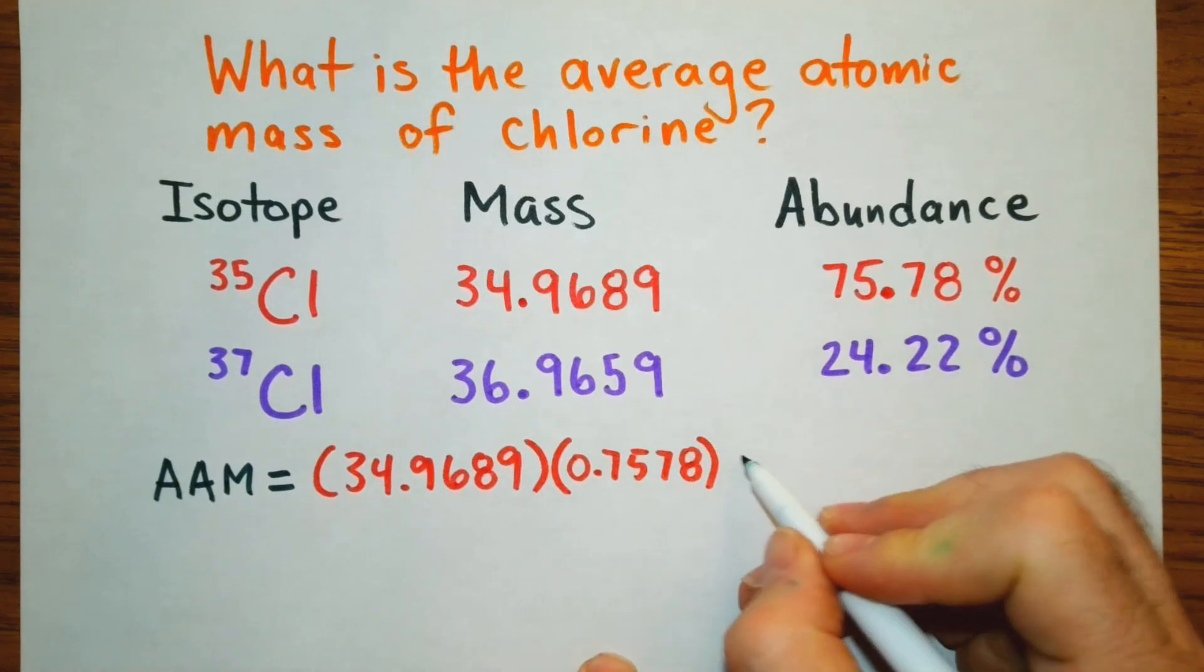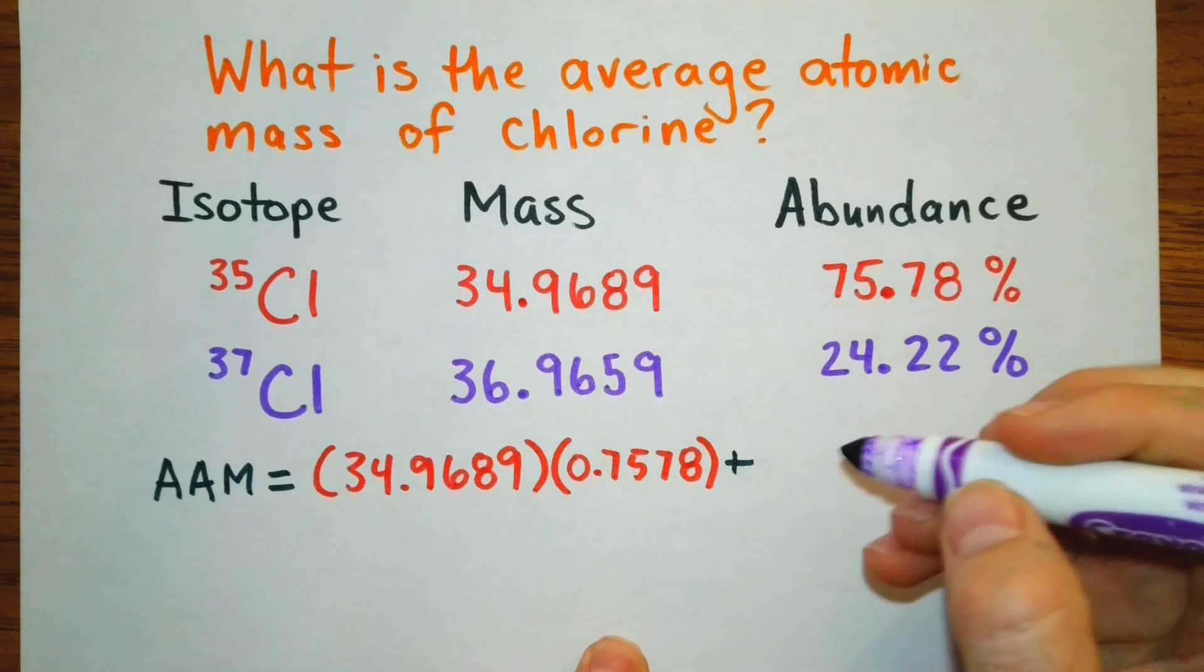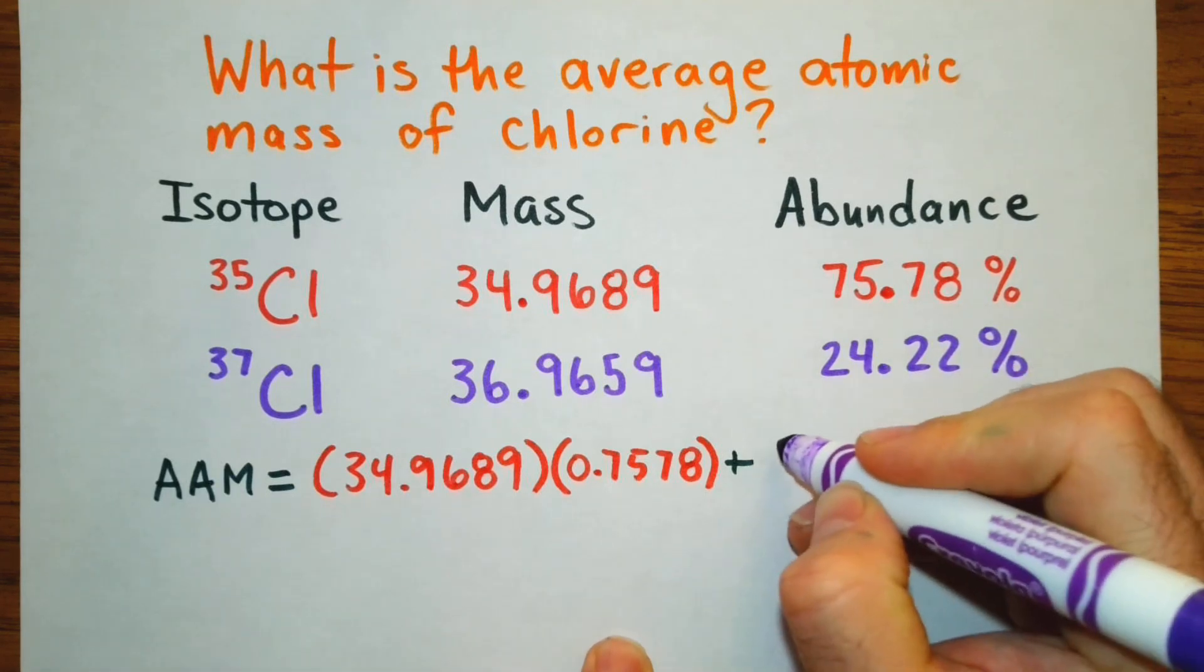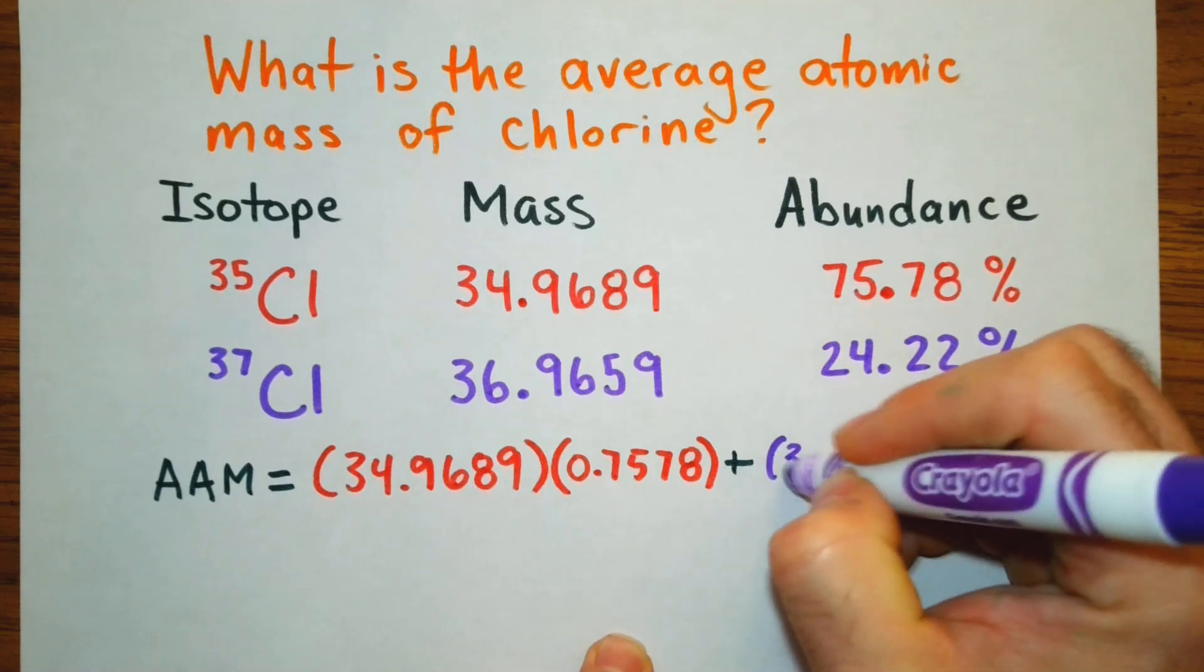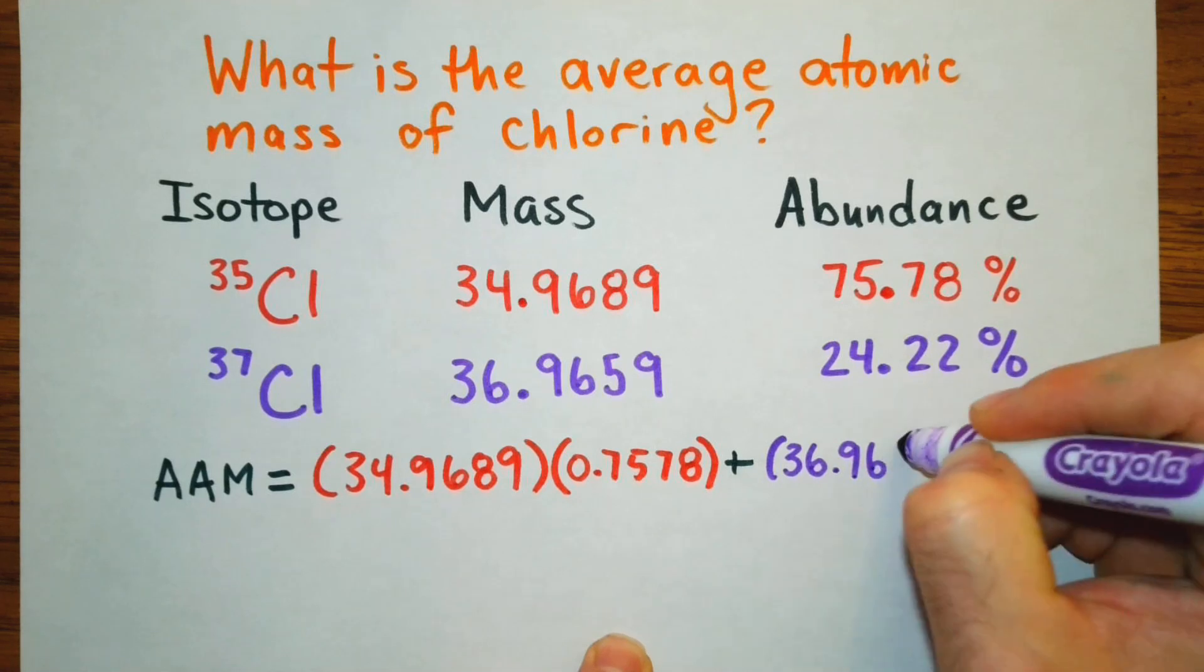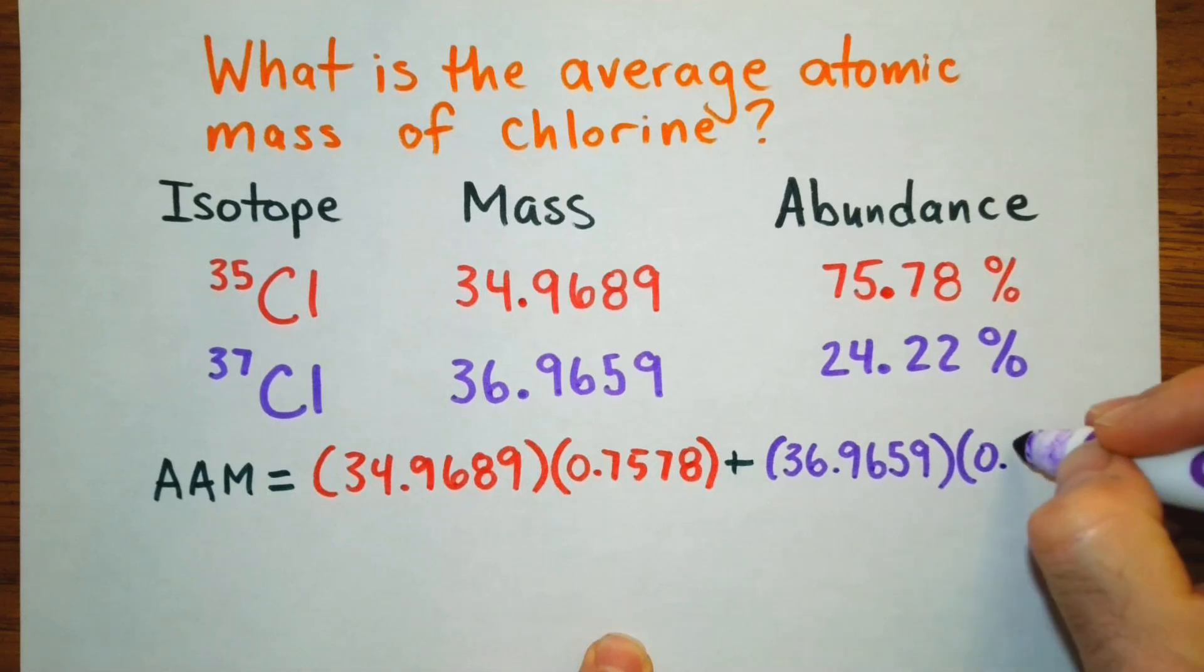Then we are going to add the product of the mass and decimal form of the abundance for chlorine-37. So then we have 36.9659 and then times 0.2422.